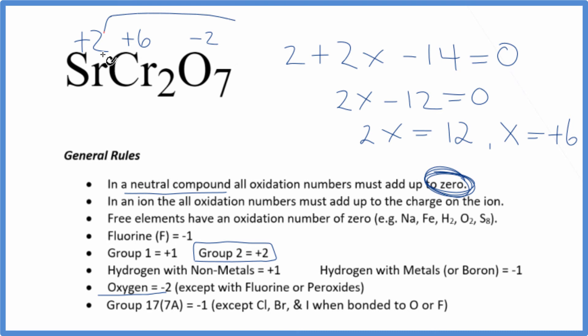Note that we could look at this dichromate ion here, Cr2O7. This whole thing will have a two minus ionic charge, and you could use this rule here to help you figure out the oxidation number on the chromium. I think it's probably easier, though, to go about it this way.